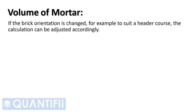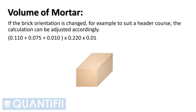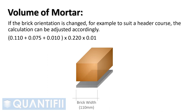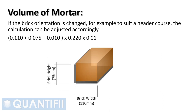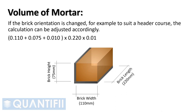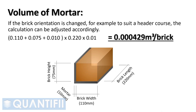If the brick orientation is changed, for example to suit a header course, the calculation can be adjusted accordingly: open bracket, 0.11 meters for the brick bed width, plus 0.075 meters for the perp end height, plus 10 mm for mortar to fill the void below the perp end, close bracket, multiplied by 0.22 meters for the length of the brick bed, multiplied by 10 mm for the mortar joint thickness. This gives us a mortar volume of 0.000429 cubic meters per brick.